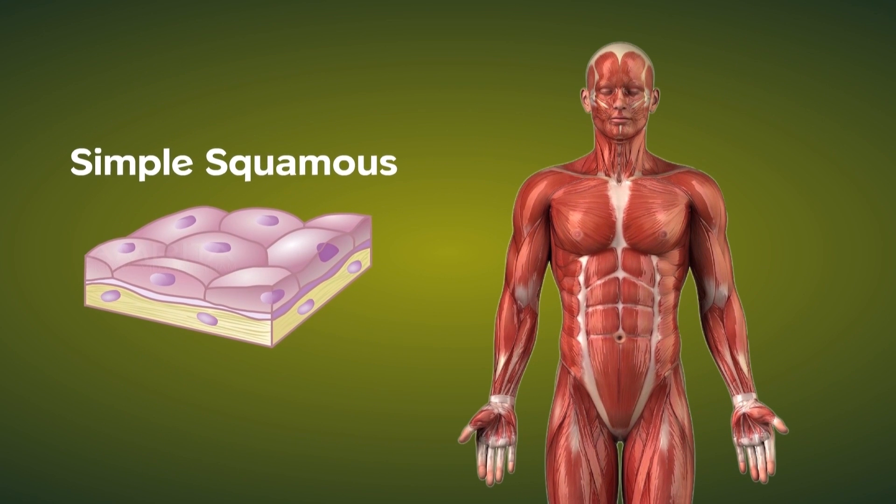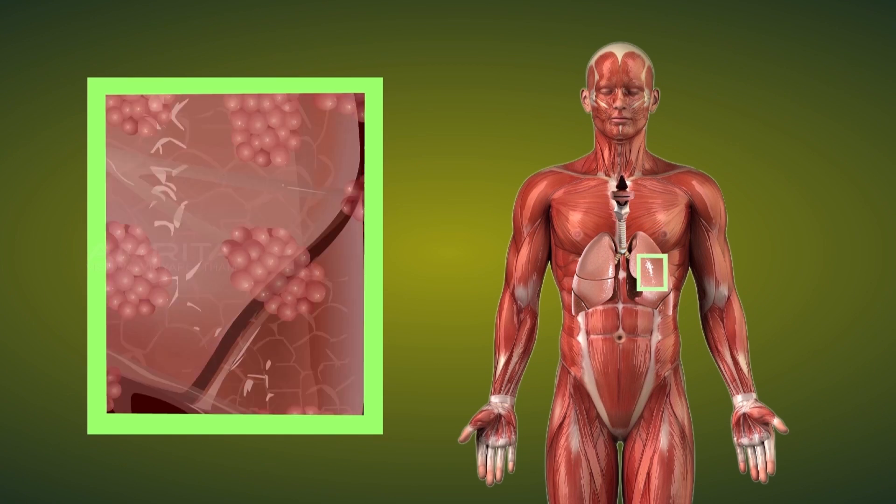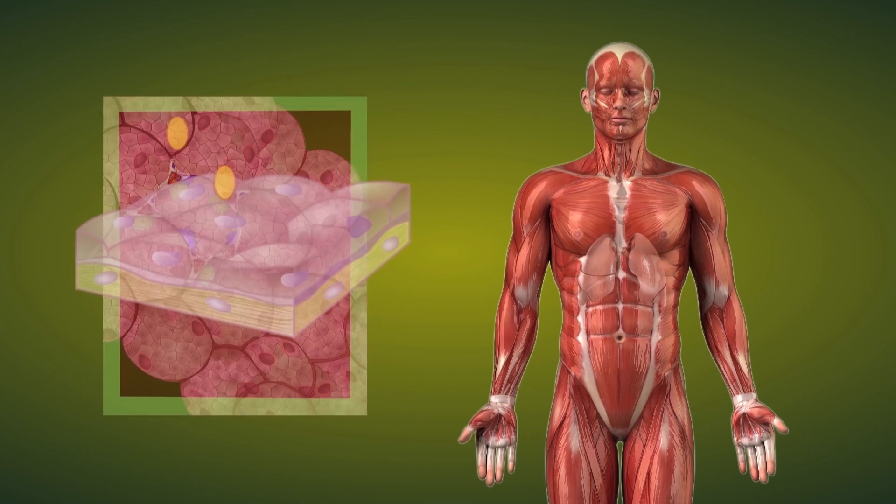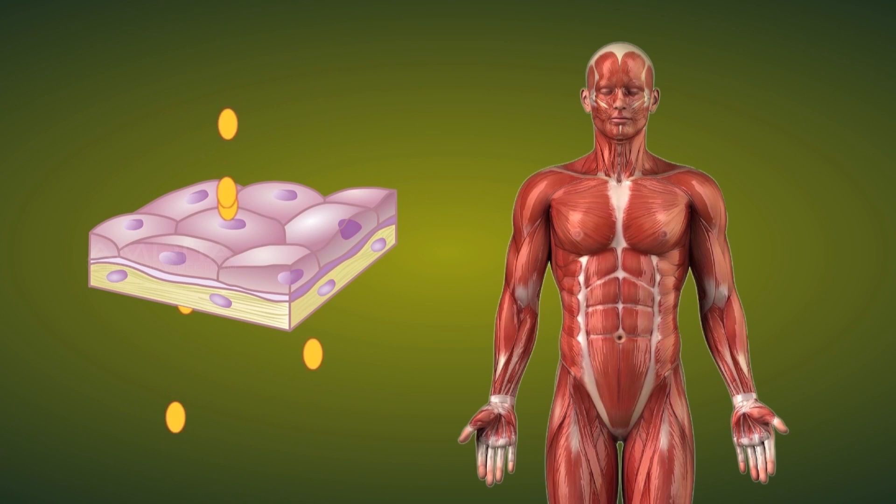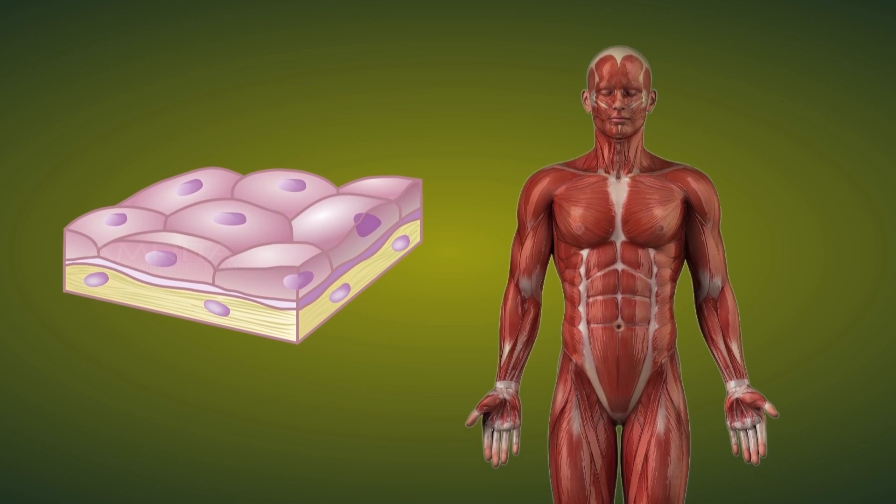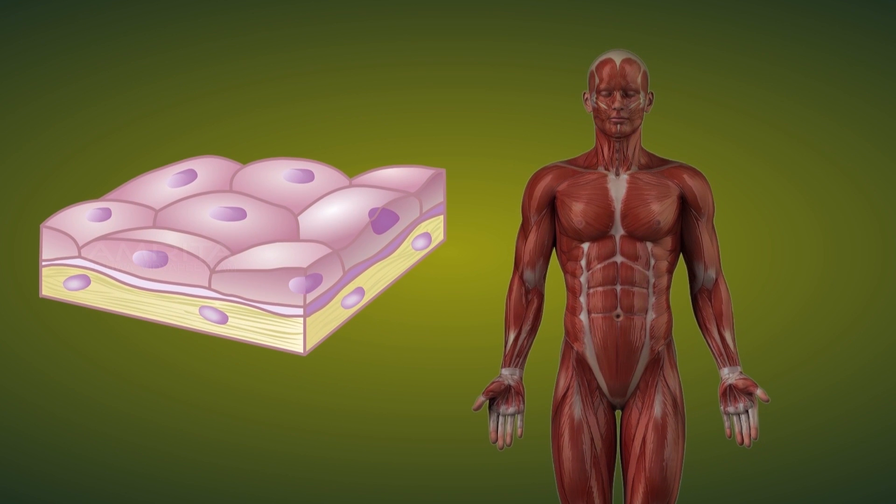The simple squamous epithelium is found in the lining of the alveoli and allows transport of small molecules across the membrane. It is extremely thin, flat and single-layered.